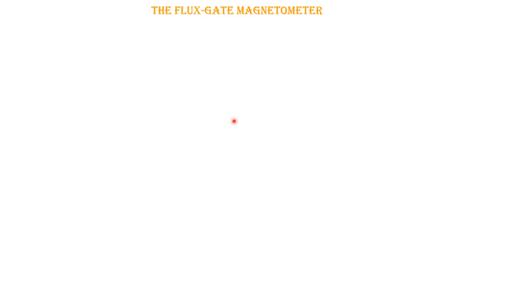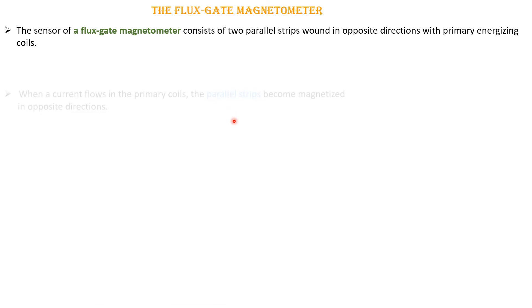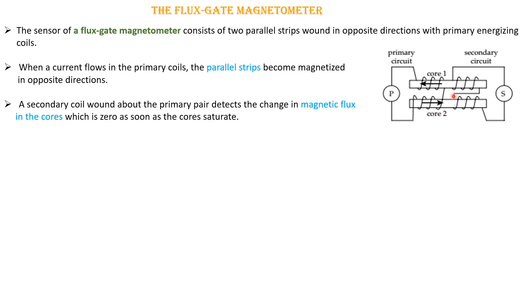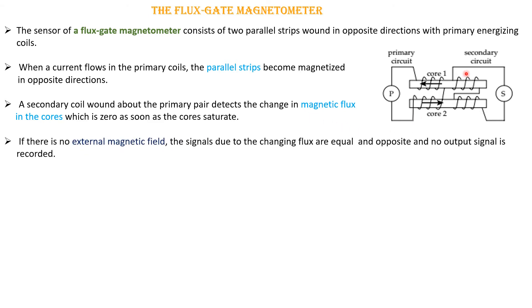The fluxgate magnetometer is a vector magnetometer. It consists of two parallel strips wound in opposite directions, with a primary energizing coil and a secondary coil. When current flows, the two parallel strips become magnetized in opposite directions. The secondary coil detects the change in magnetic flux — following Faraday's law of induction from Maxwell's equations. When there is no external magnetic field present, the signals due to flux change are equal and opposite, producing no output signal.